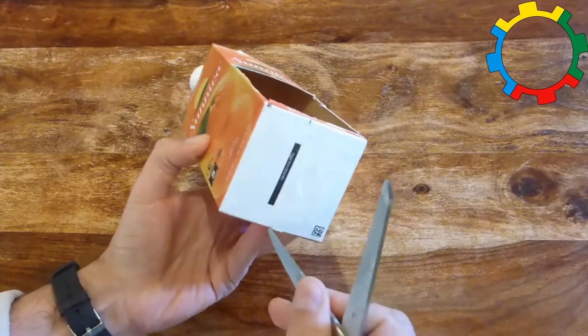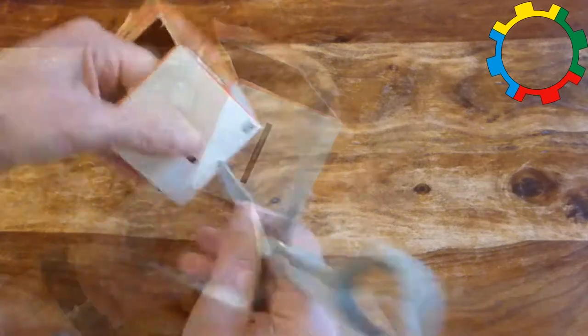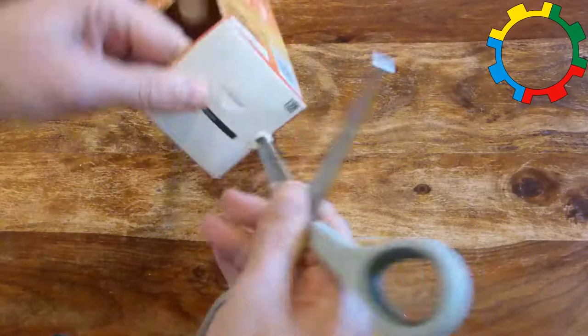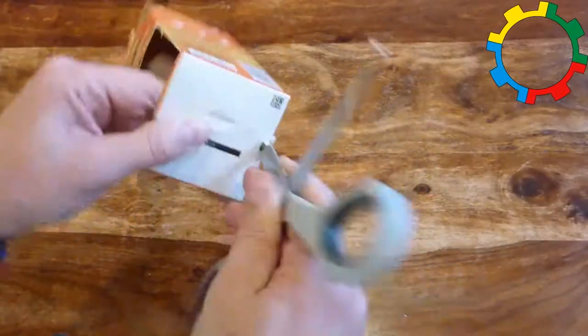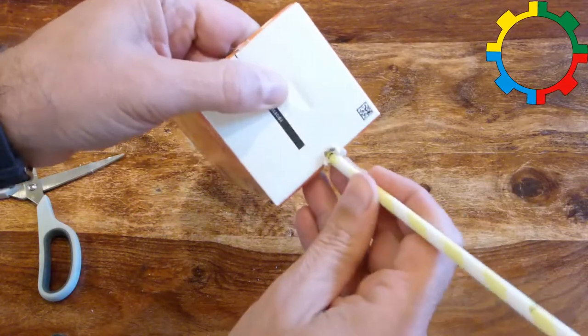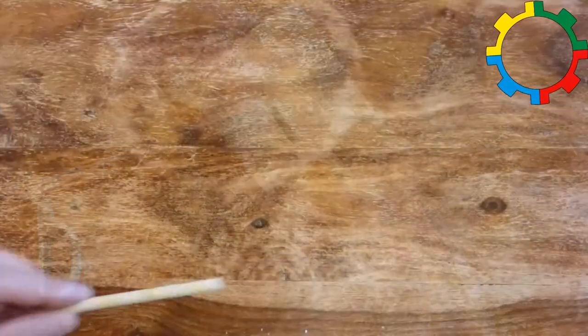Use the scissors to prick a hole in the stern just above the middle of the bottom edge of the stern. The hole shall be just big enough for the straw to pass through and still be tight.